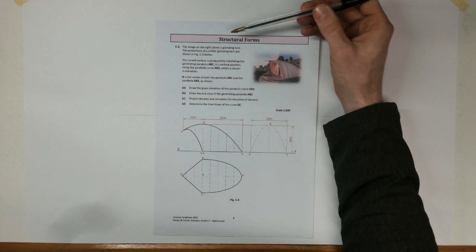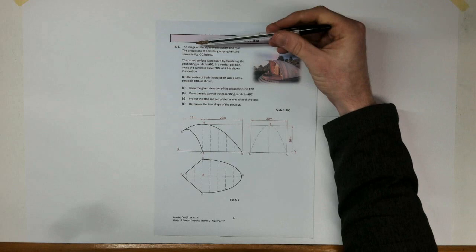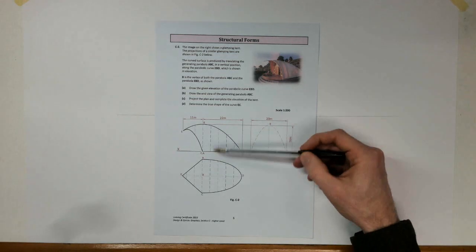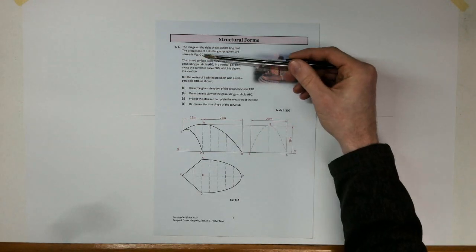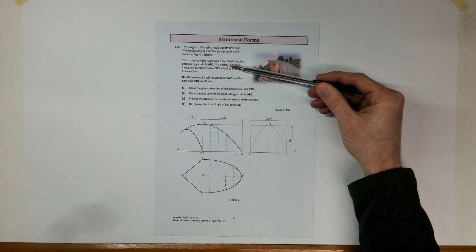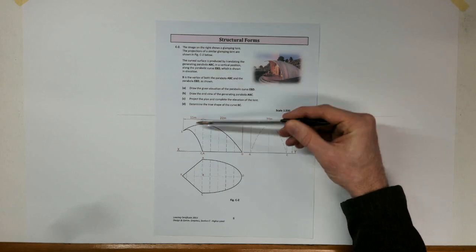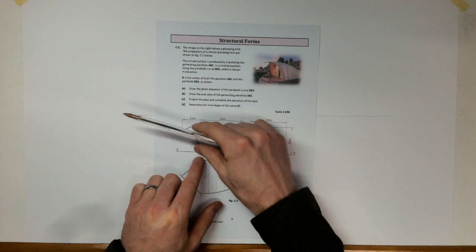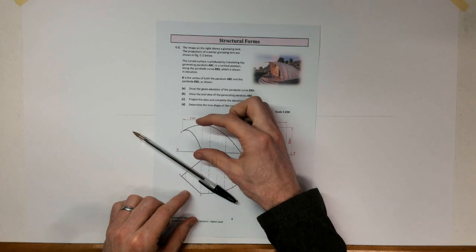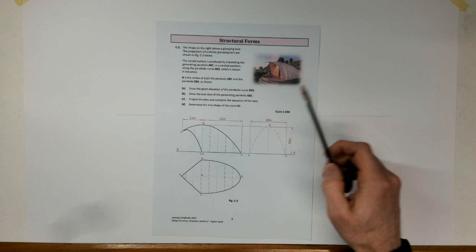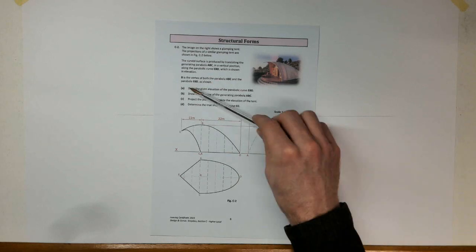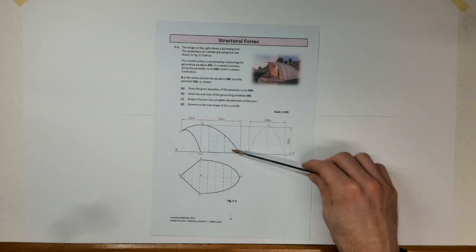Welcome to the 2023 Question C2, the Structural Forms question. The image on the right shows a glamping tent. The projections of a similar glamping tent are shown in figure C2 with our elevation, plan, and end view. A curved surface is produced by translating the generating parabola ABC in a vertical position along the parabolic curve EBD. B is the vertex of both parabola ABC and parabola EBD.